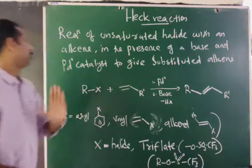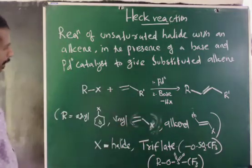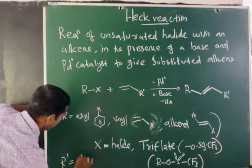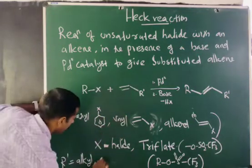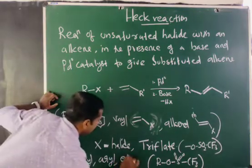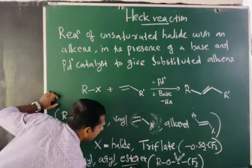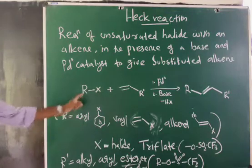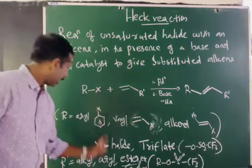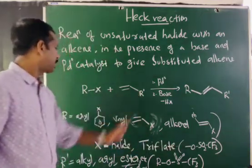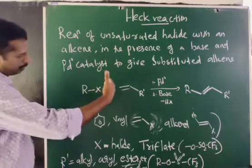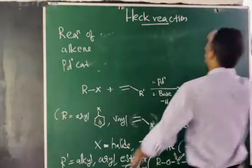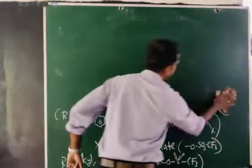Now, when we come to R', R' can be an alkyl group, an aryl group, or an ester group (–COOR, e.g., –COOMe), etc. So keep it in mind: R can be aryl, vinyl, or alkenal; X can be a halide or triflate; and R' can be an alkyl, aryl, or ester group. Now let us discuss more about the Heck reaction — what is the Heck reaction? It is the reaction of an unsaturated halide with an alkene in the presence of a base and palladium catalyst to get a substituted alkene.